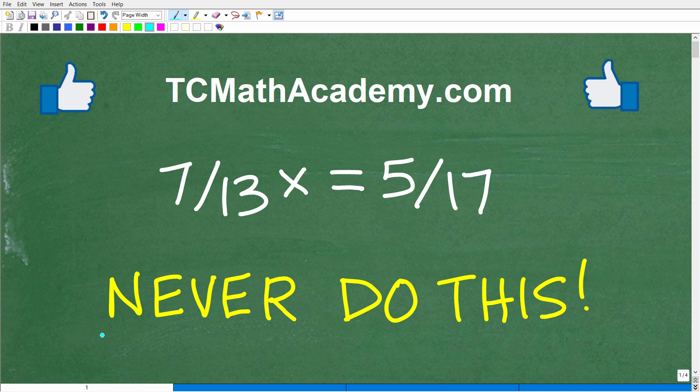Okay, so you never want to do this in algebra if you're trying to solve an equation. Now, of course, I'm going to show you what this thing is in just one second. But first, let's see if you can solve this basic equation. We have 7 over 13x is equal to 5 over 17. And feel free to use a calculator. But if you could solve this, go ahead and put your answer into the comment section.